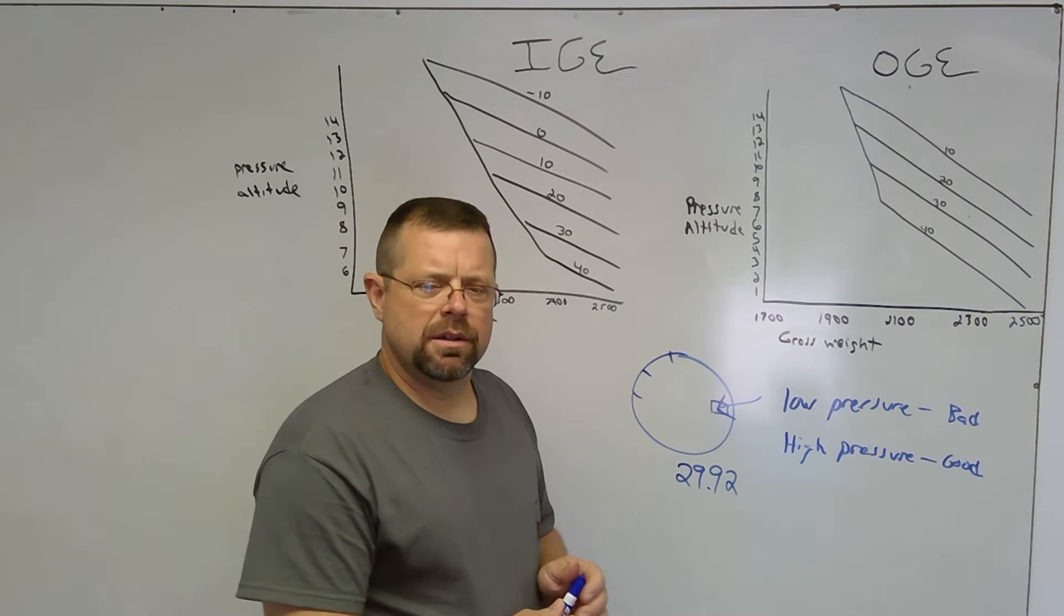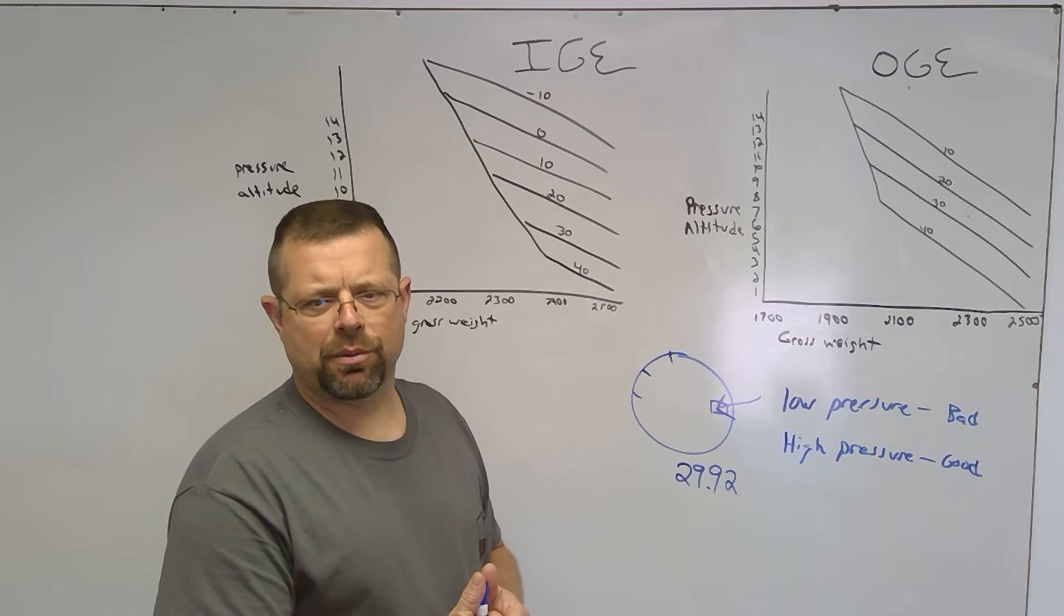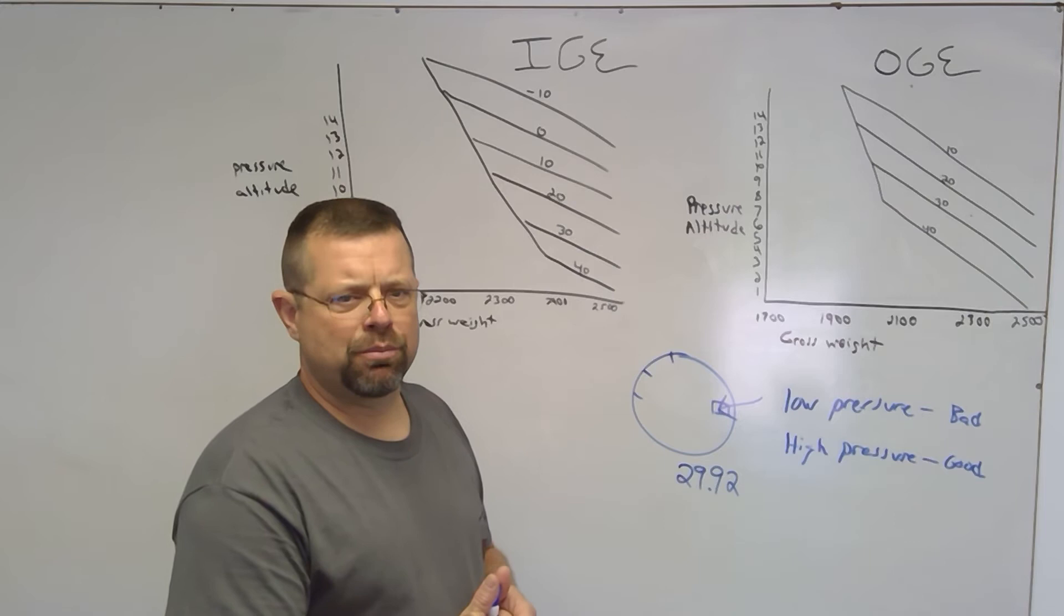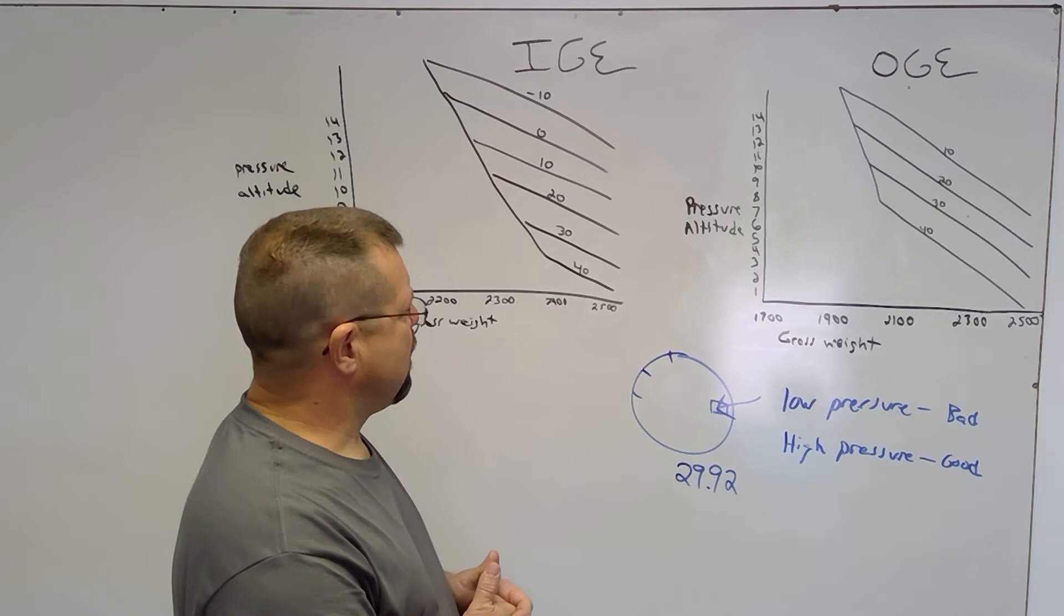So now we've talked about what pressure altitude is. It's what you get when you put 29.92 in the Kollsman window, or it's performance altitude for a non-standard barometric pressure. We know that low pressure is bad and will cause pressure altitude to be higher. We know that high pressure is good and will cause pressure altitude to be lower.